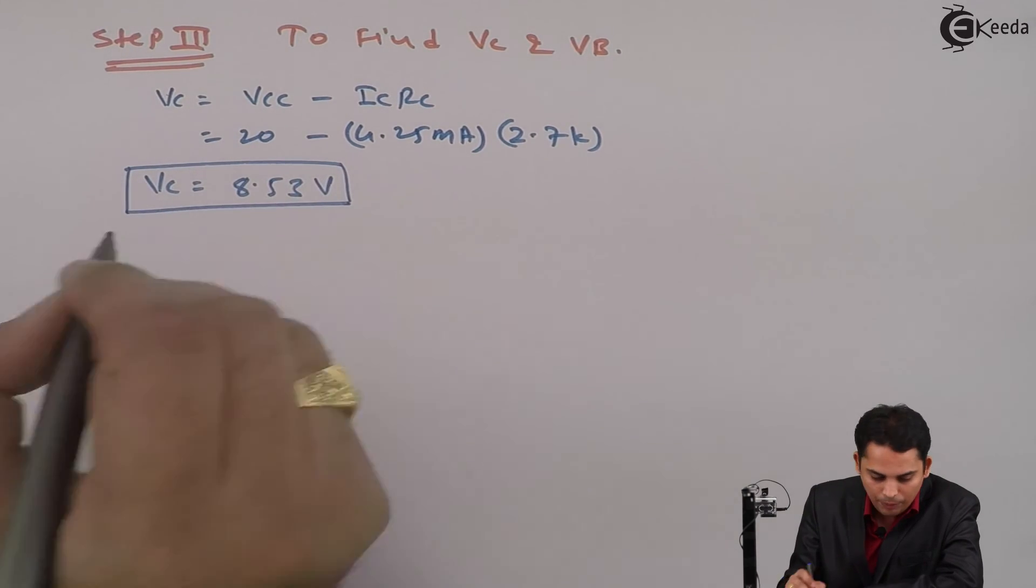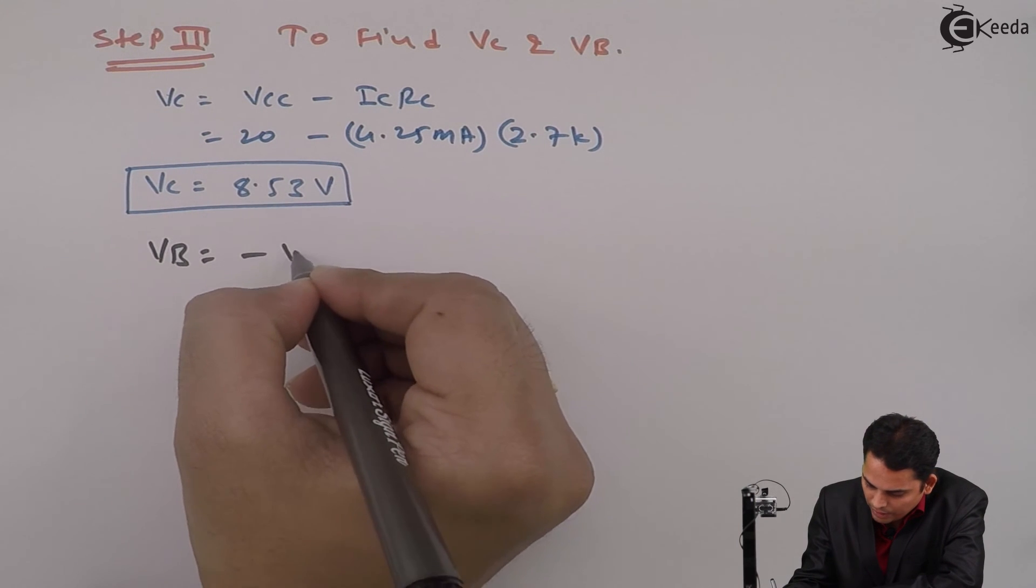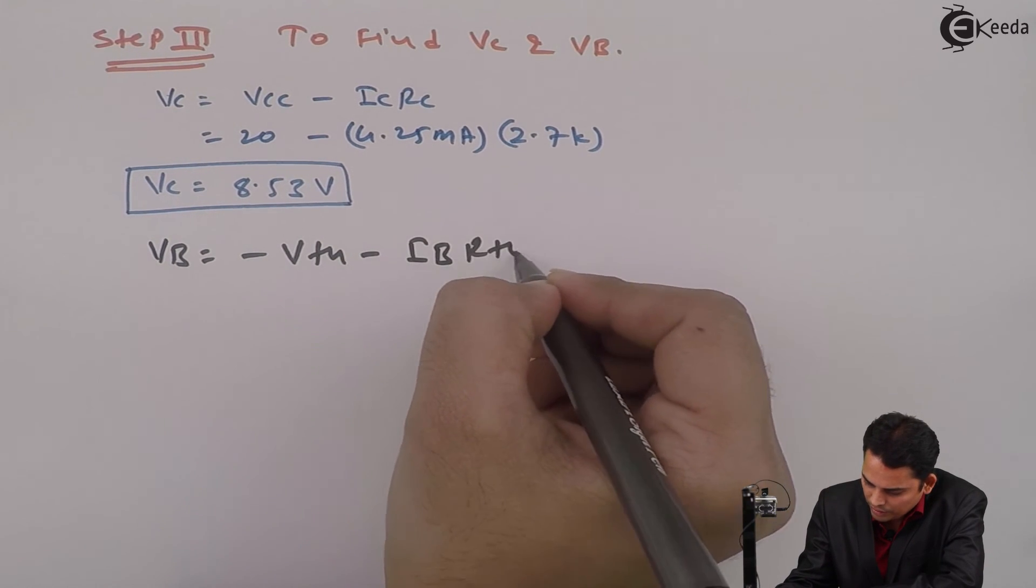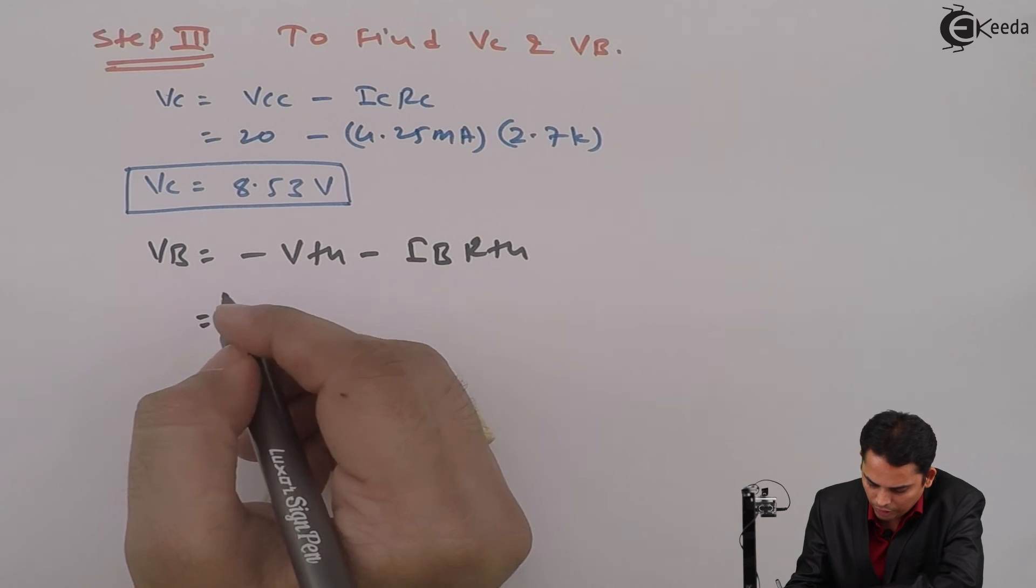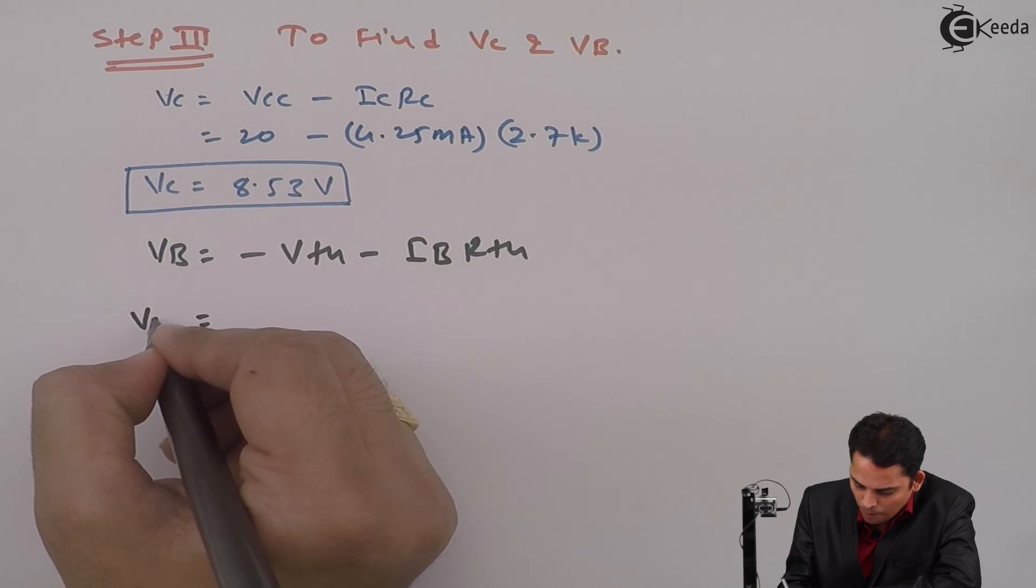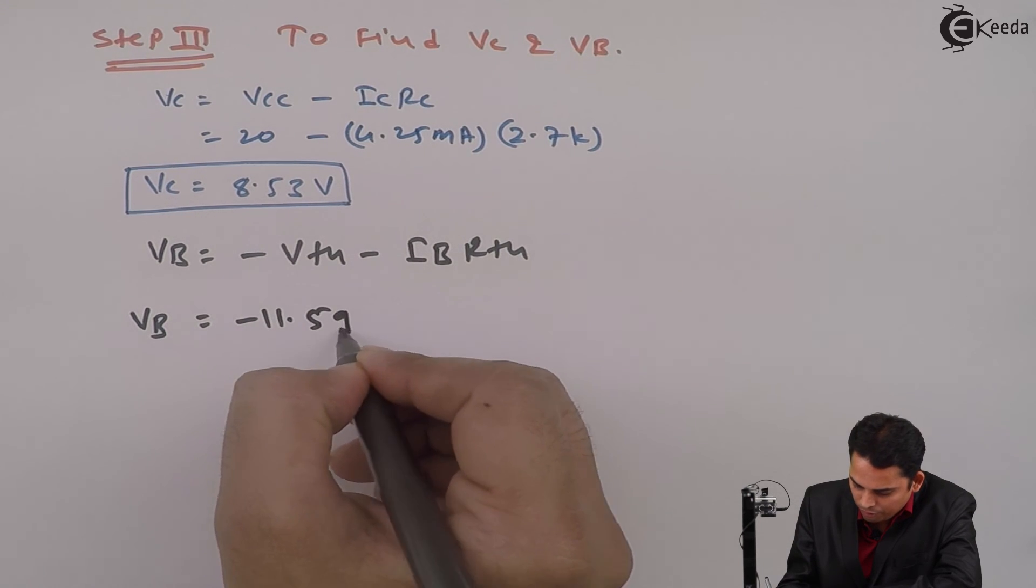Similarly, VB is equal to minus Vth minus IB into Rth. If we solve this, we will get value of base as equal to minus 11.59 volts.